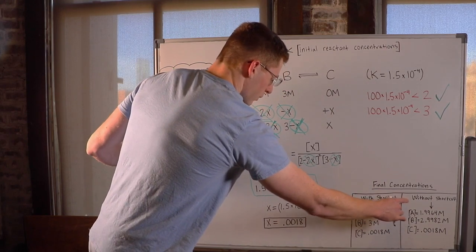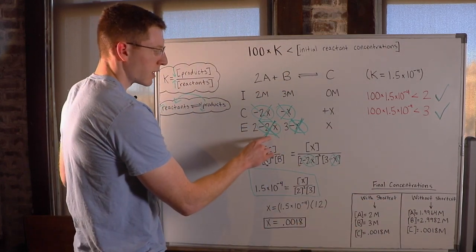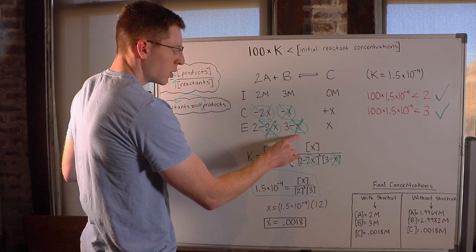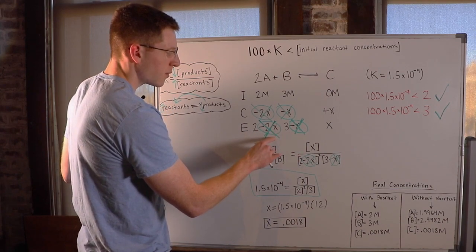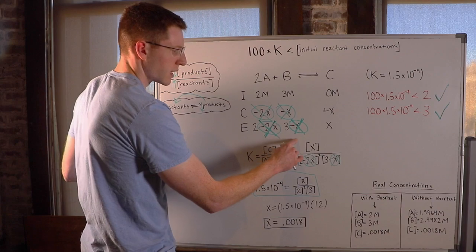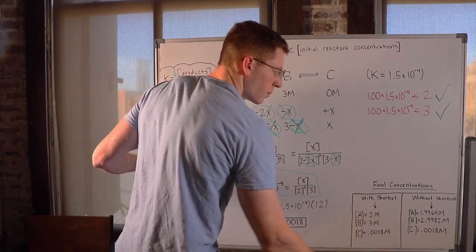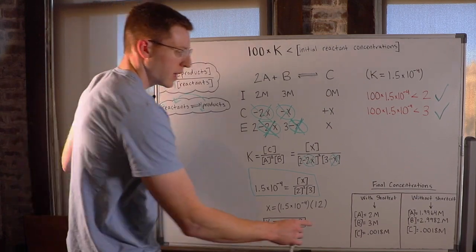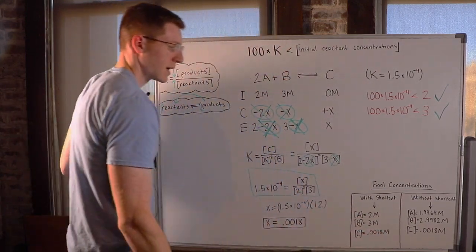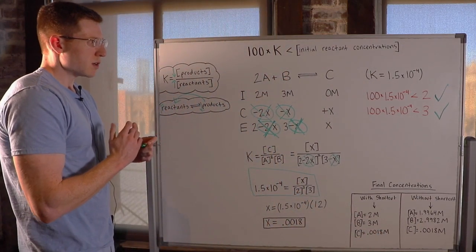Without the shortcut, however, if we had kept this minus 2X and this minus X here, we would have subtracted very small numbers from the 2 and the 3. And they would have shifted down very slightly from 2 to 1.9964 molar and from 3 to 2.9982 molar.